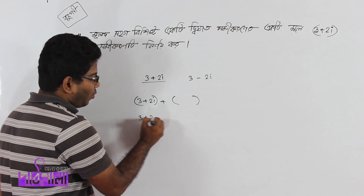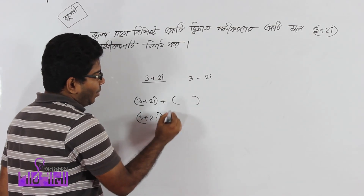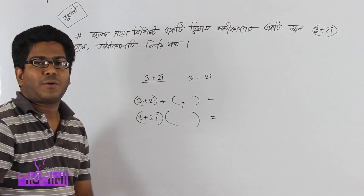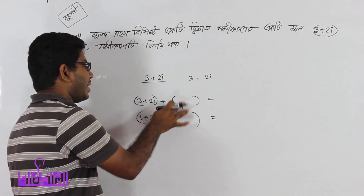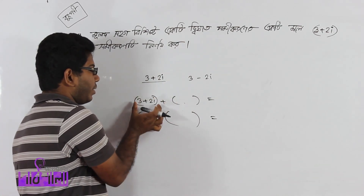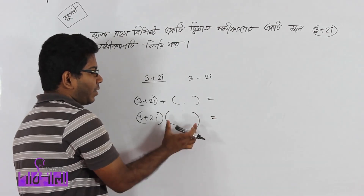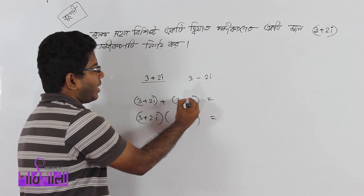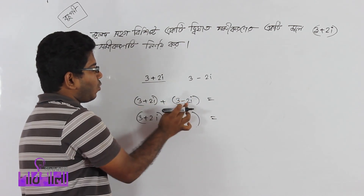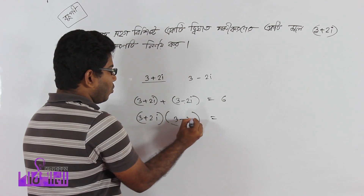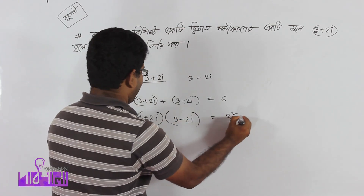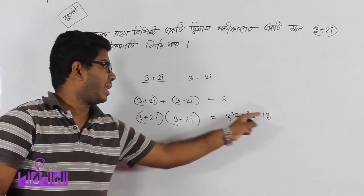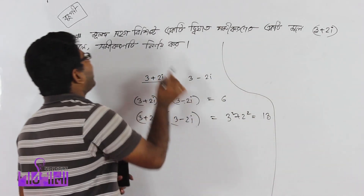আবার ওই 3 plus 2i থেকে, ওই একই number যোগ করে real number পেতে চাও। তাহলে এরকম একটি মাত্র number আছে যে যোগ করেও 3 minus 2i কে real বানাতে পারে, আবার গুণ করেও real বানাতে পারে — সেটা হচ্ছে 3 minus 2i। যোগ করলে 2i কাটাকাটি হয়ে 6 পাই। গুণ করলে 3 squared plus 2 squared = 13 পাই।